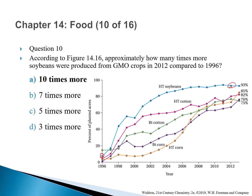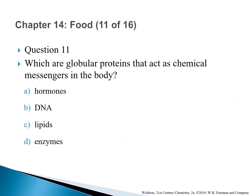Question 11: Which globular proteins act as chemical messengers in the body? The correct answer is A — hormones. When proteins are chemical messenger molecules that travel through the blood, we call them hormones.